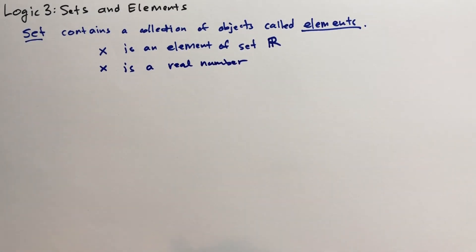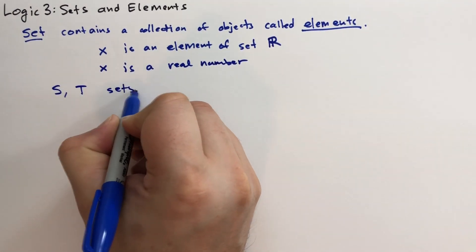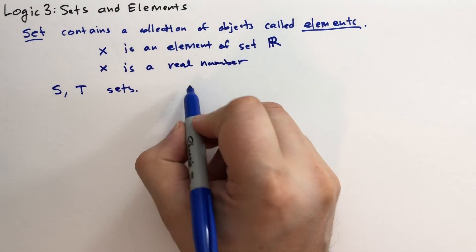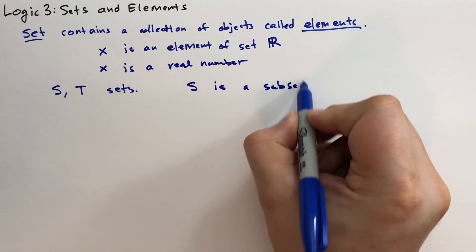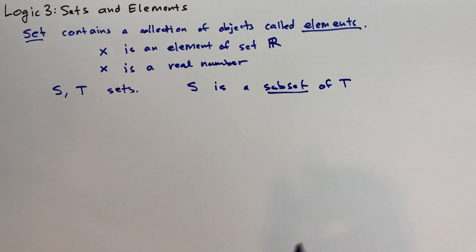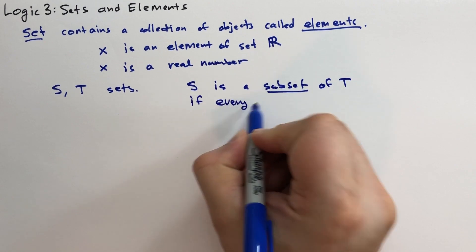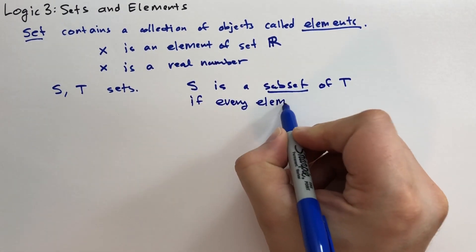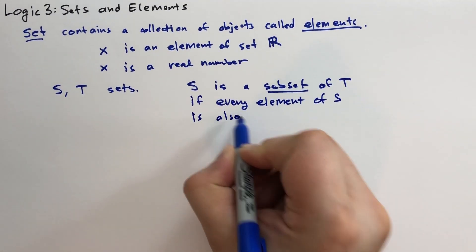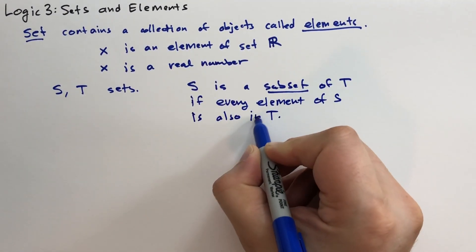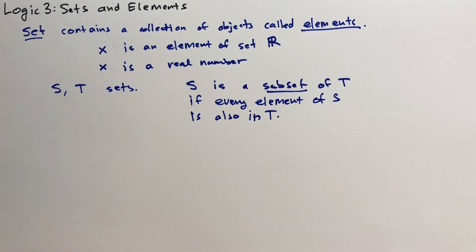Alright, let's talk about relationships between sets. So we have S and T are sets. And we say that S is a subset of T. If S is a subset of T, every element of S is also in T. Pretty simple. So it's a pretty simple test. You just go through all the elements of S and check that they're all in T.